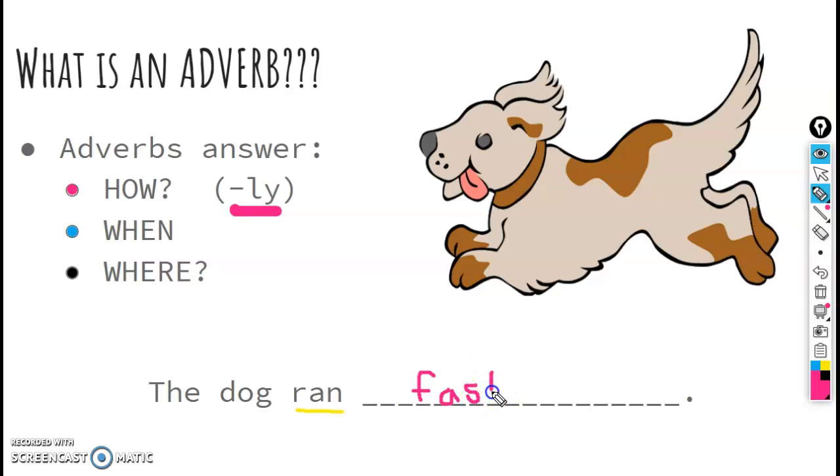If you'll remember, I said that a lot of adverbs can end in ly, if they're a how adverb. Fast is one of the few that does not. But other words like quickly or slowly, quietly, loudly, those are all different adverbs that tell us how our noun is completing their verb, how they're doing their verb. So in this case, how the dog is running. So the dog ran fast, the dog ran quickly. Those are two different how adverbs.